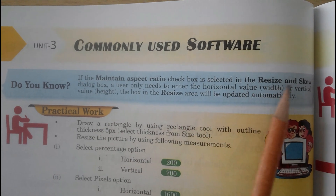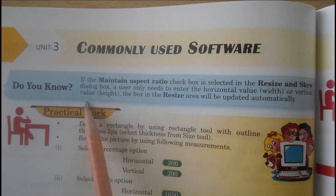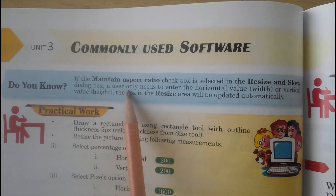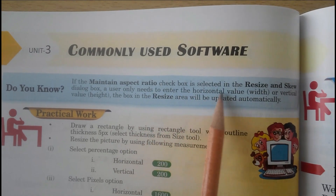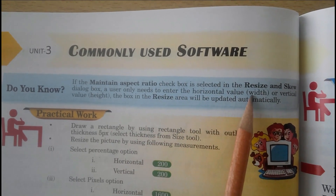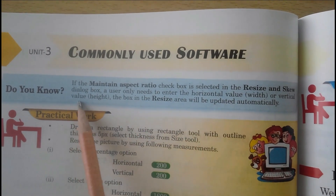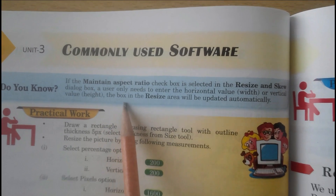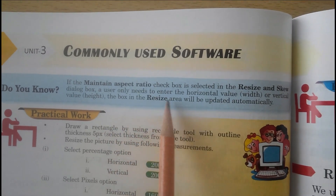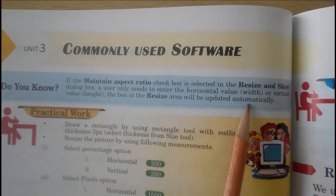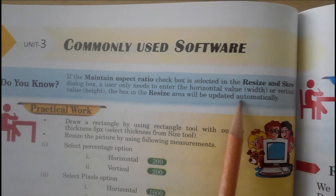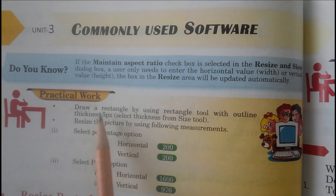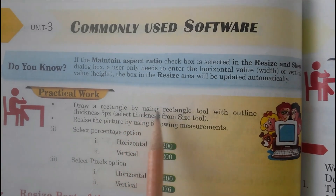Open page number 90. Do you know — students, if the Maintain Aspect Ratio check box is selected in the Resize and Skew dialog box, a user only needs to enter the horizontal value (width) or the vertical value (height). The other box in the Resize area will be updated automatically.